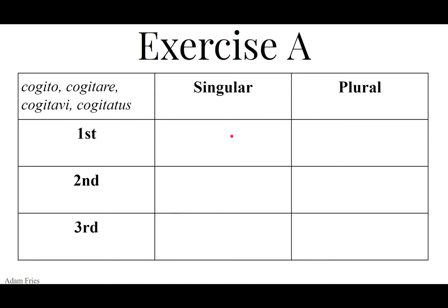Future perfect: third principal part, chop off the I, get the perfect stem cogitav, add cogitav to each blank. Then add ERO to get cogitavero for the first person singular. For the rest, add ERI — the tense marker — or remember ero, eris, erit, erimus, eritis, erint for the third person plural. To get: cogitavero, cogitaveris, cogitaverit, cogitaverimus, cogitaveritis, cogitaverint.